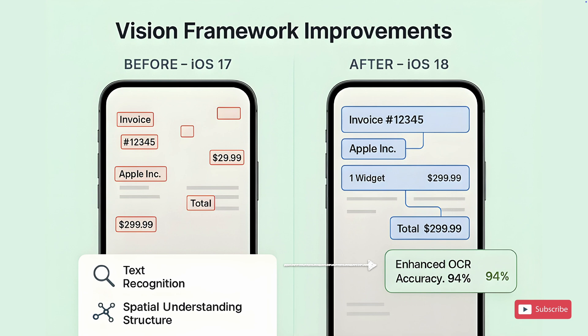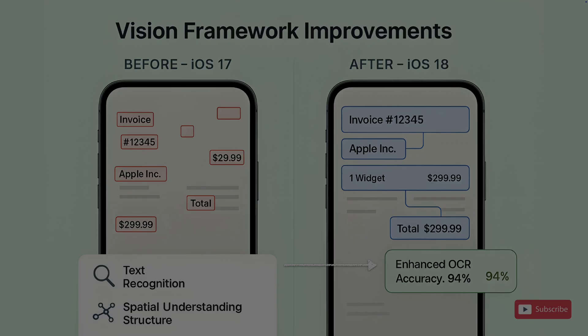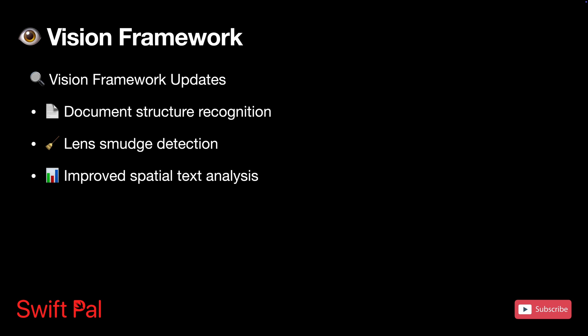Instead of returning disconnected text strings, Vision can now group related content together and give you a sense of a document's logical organization — which is huge for any app that processes business documents or forms. Lens smudge detection sounds oddly specific until you think about it: for camera apps, you can detect when the lens is dirty and either suggest cleaning or adjust processing to compensate. For AR experiences where camera quality matters, this could be the difference between a smooth experience and users wondering why everything looks blurry.